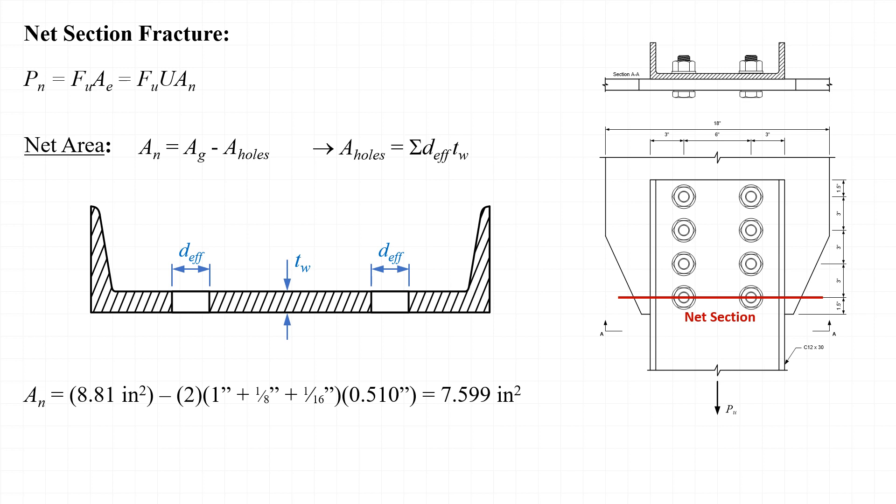Calculating the net area, we have the gross area of 8.81 inches squared, minus the material lost for drilling two holes. Each hole has a diameter of one inch plus one-eighth of an inch, and then we add an extra one-sixteenth of an inch to account for material damage during fabrication. Finally, we multiply by the thickness of the web, 0.510 inches, giving a net area of 7.599 inches squared.